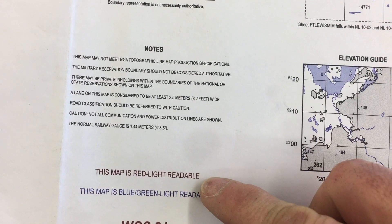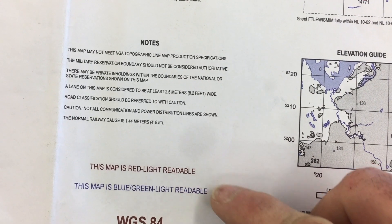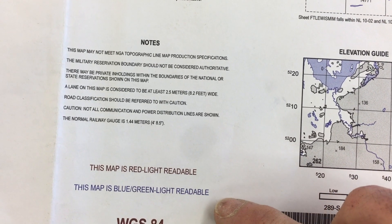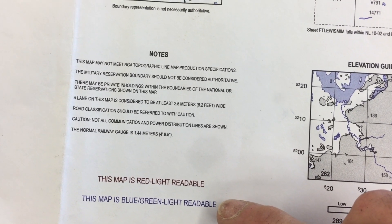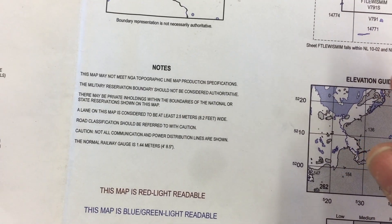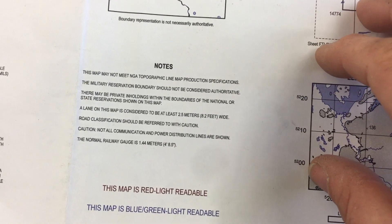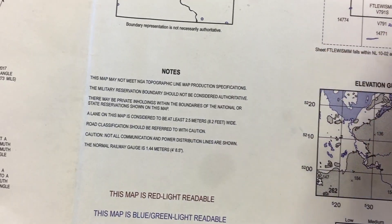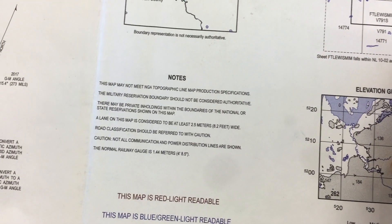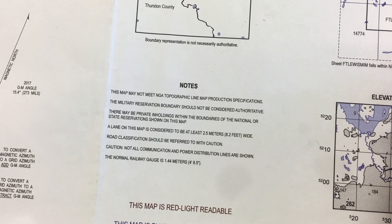Both of these maps are red light readable, and this Washington map is also blue-green light readable. What that means is if you shine a red light on these maps, what you see in red, you'll still be able to see. I'll talk more about colors in a minute.